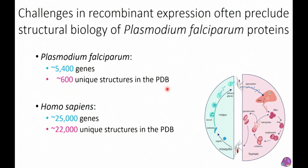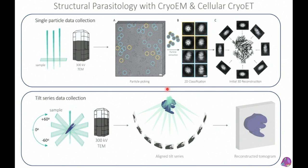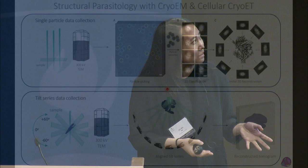To do structural biology on this fascinating parasite, we've had to find ways around the recombinant expression problem. During my PhD and now in my lab, we've chosen to get structures directly from enriched preparations from the actual parasites themselves. This is made possible by cryo-electron microscopy, which has really broken open the doors on structural characterization of proteins that were previously impossible to study without large recombinant quantities.